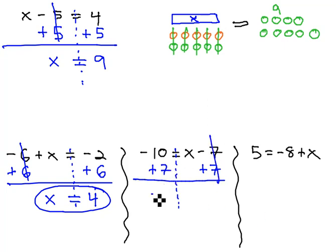Negative 10 plus 7 is negative 3, and all that's left on the right side is the x, which is what we want.